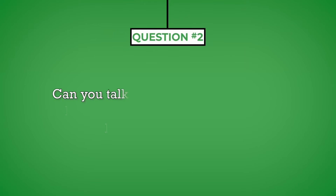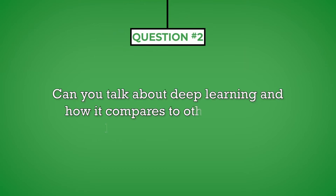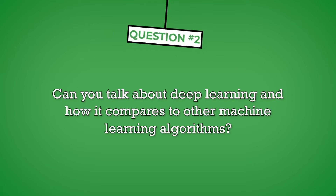Question number two: Can you talk about deep learning and how it compares to other machine learning algorithms? This is a general question related to the field of machine learning. While it has some technical aspects, the interviewer uses it to better understand your communication style and your ability to discuss technical terms in simple, easy to understand language. The trick is not to overcomplicate these questions. Being brief and to the point will serve as your best strategy, and the interviewer will ask a follow-up question if they need additional information.